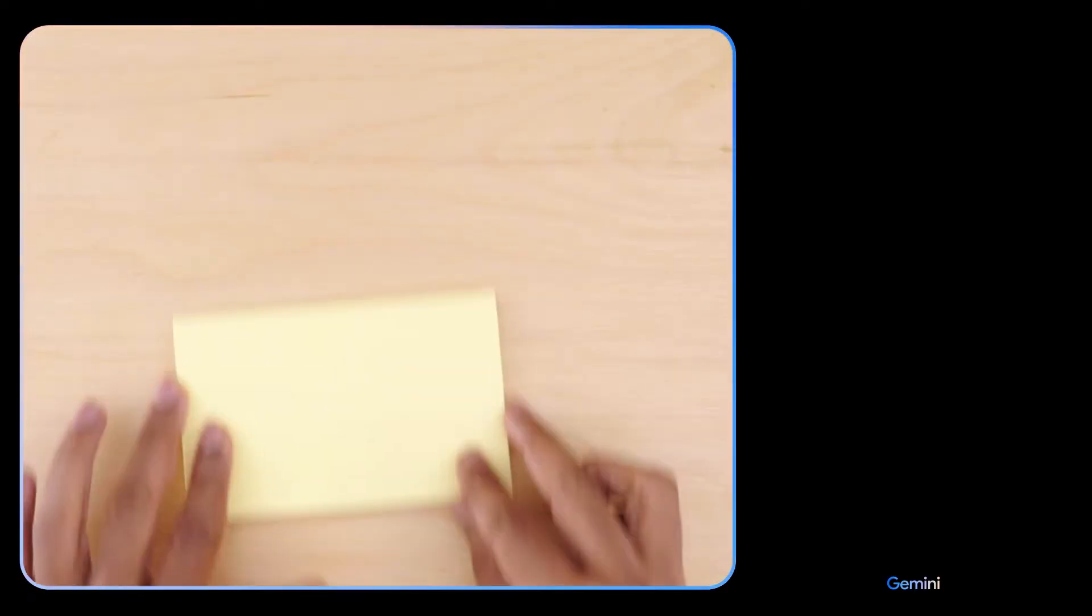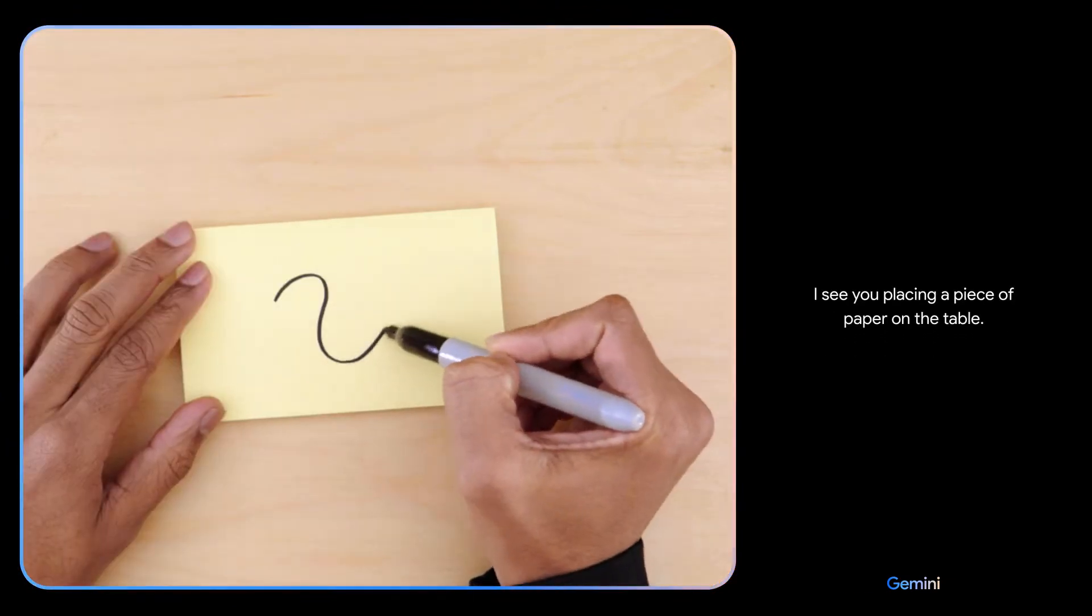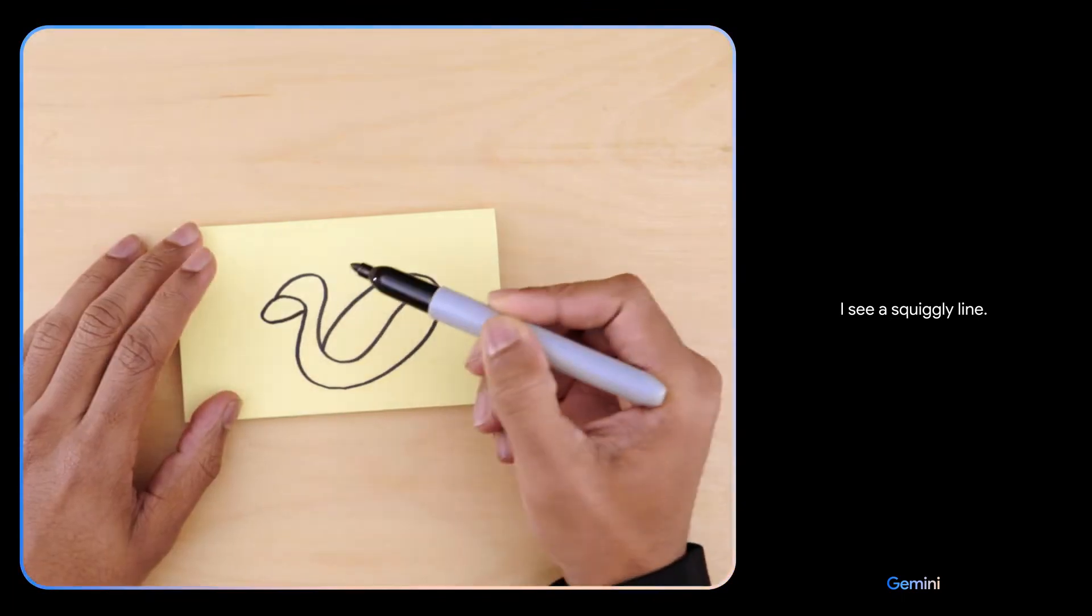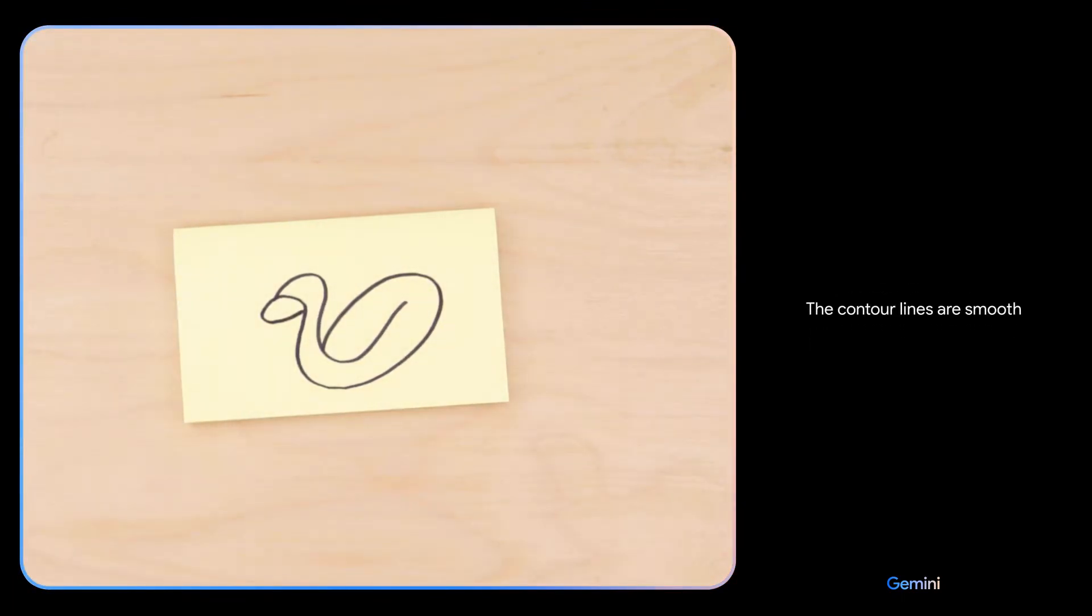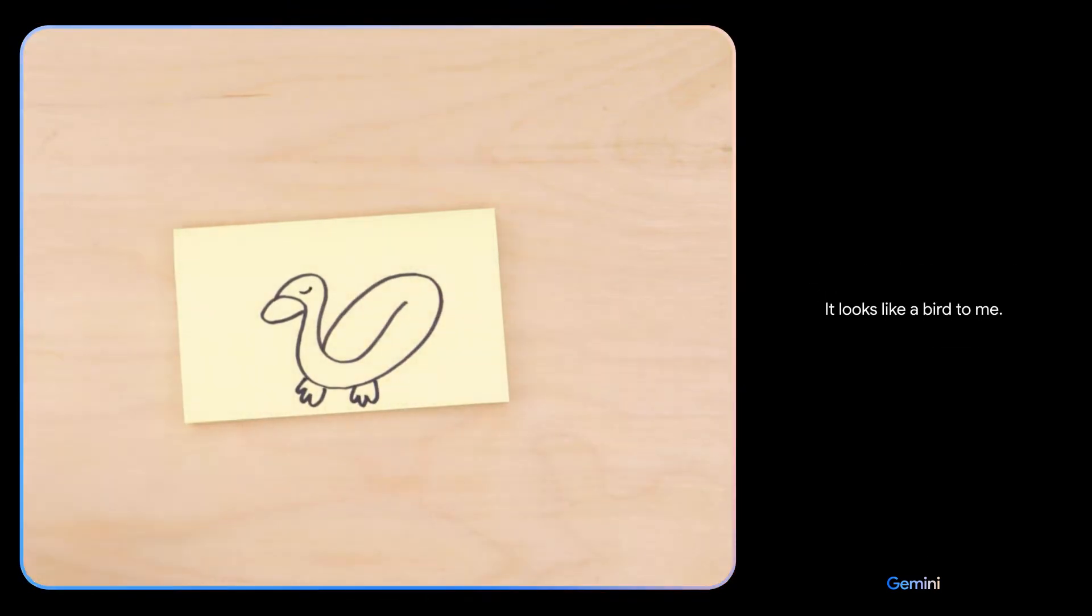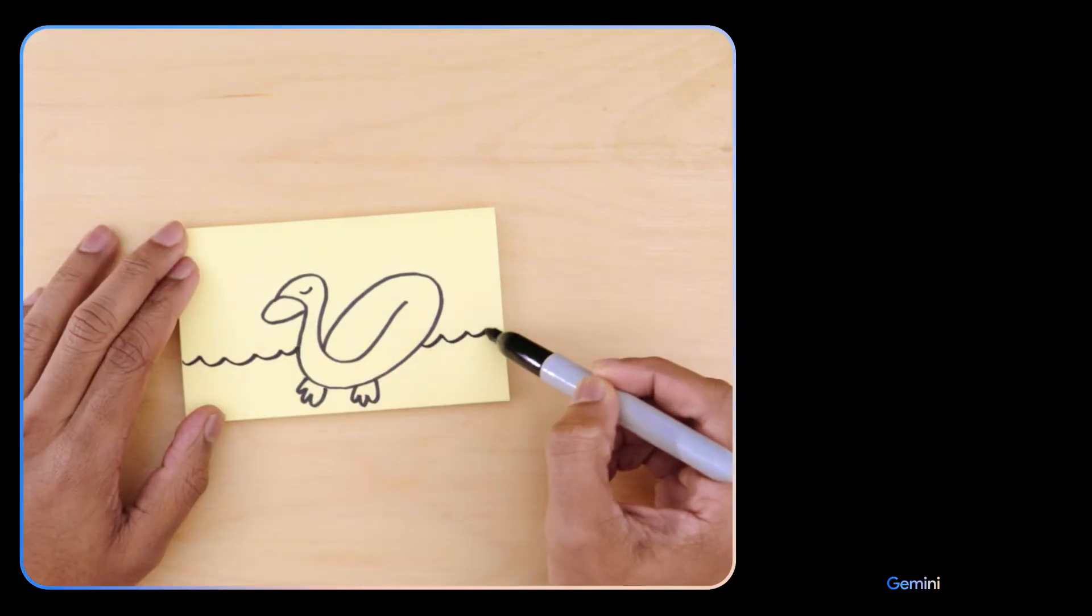All right, testing Gemini. Here we go. Tell me what you see. I see you placing a piece of paper on the table. I see a squiggly line. What about now? The contour lines are smooth and flowing with no sharp angles or jagged edges. It looks like a bird to me. What about this? The bird is swimming in the water. It has a long neck and beak. It is a duck.